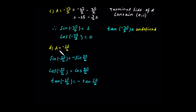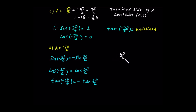If A equals negative 5π/6, we use the opposite angle relation. Negative 5π/6 is not a quadrant angle. The positive value 5π/6 is in quadrant 2, so the reference angle formula is 180 degrees minus theta.